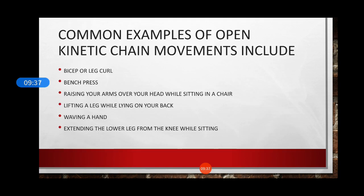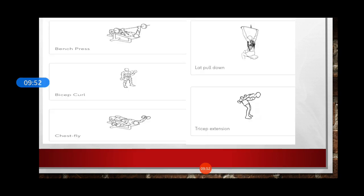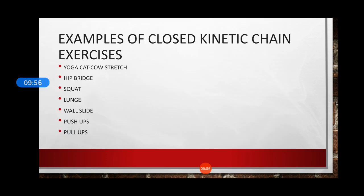What are the common examples for open chain exercises? Common examples include biceps or leg curls, bench presses, raising of your arm, lifting a leg, waving a hand, or extending the lower leg from the knee while sitting. Here you can see a few of the examples of open chain exercises.